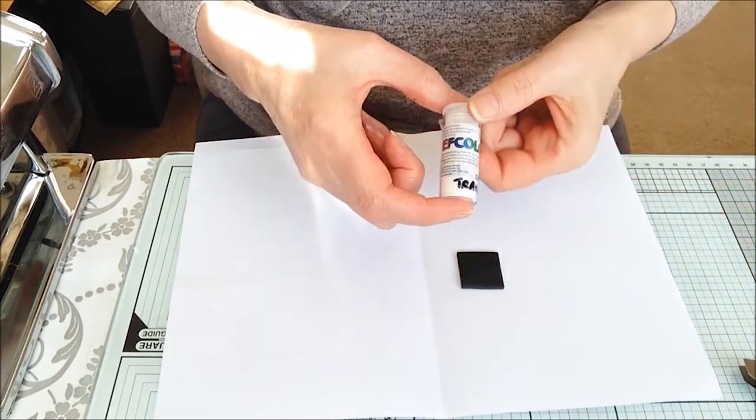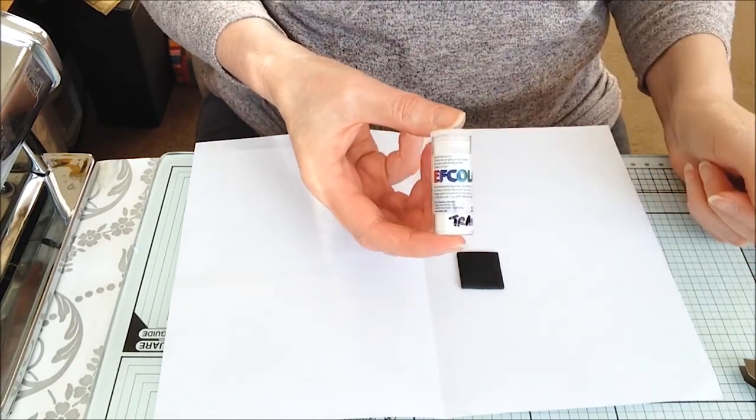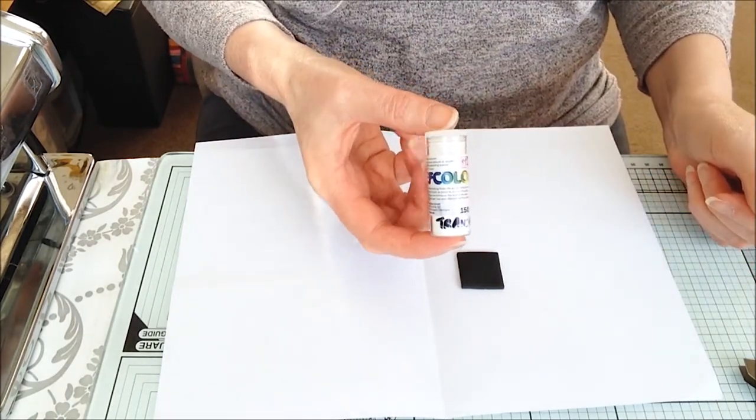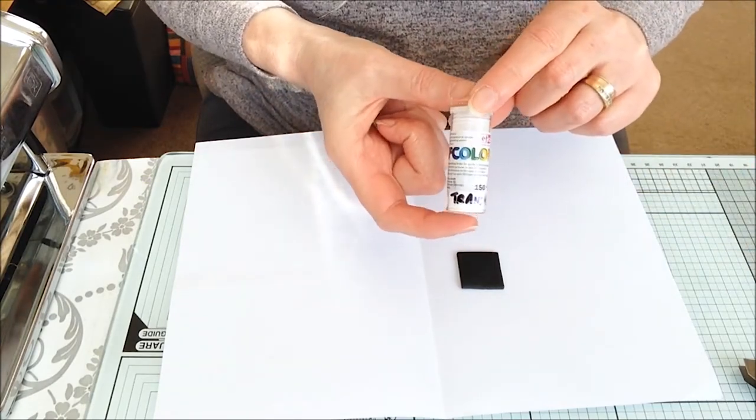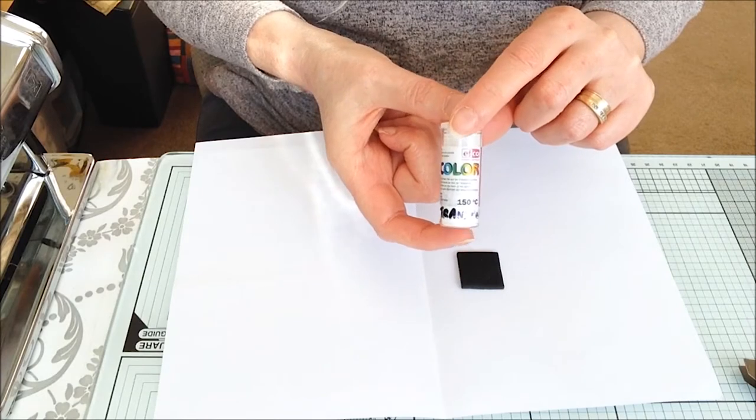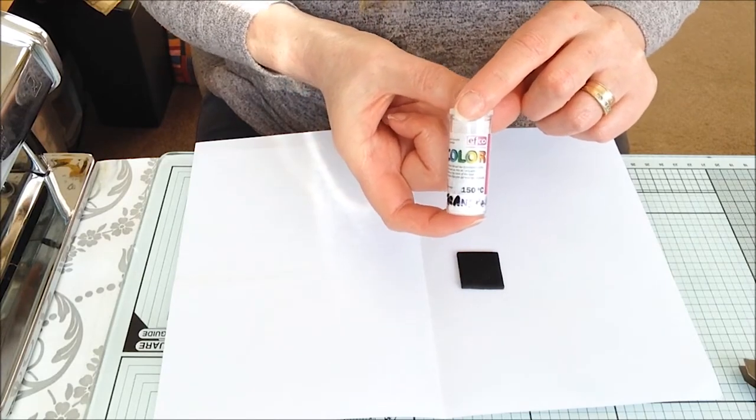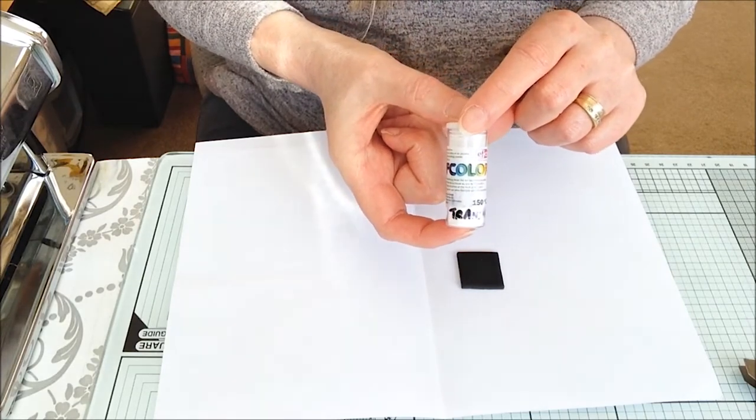Hello there, today I would like to demonstrate for you the EF colour which is the low temperature enamel. This one is the transparent and you can purchase these from cooksandgold.com and the number for this one is 861100.